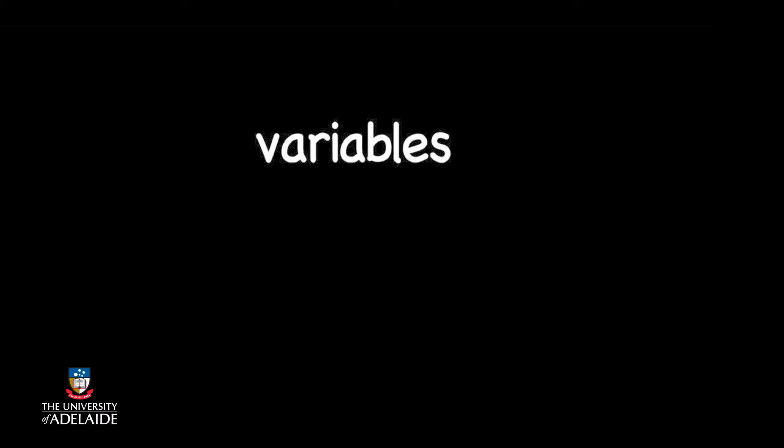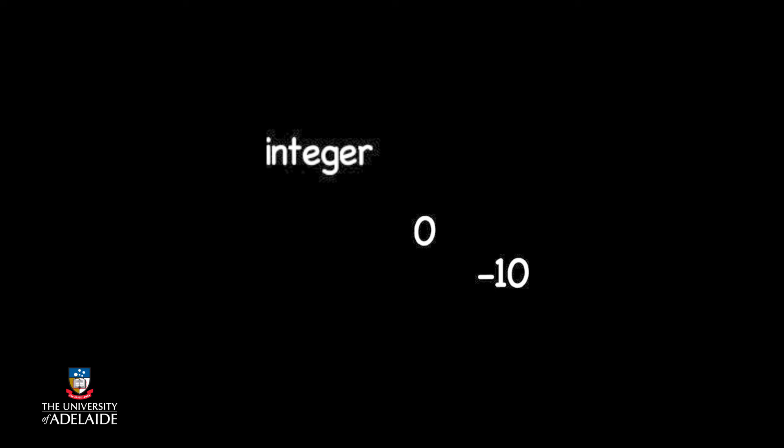Let's revisit some of the new concepts that we have introduced so far. We have talked about variables and the fact that they have a type. Most programming languages have a range of generally useful data types which can be used for variables that you create in your program. The one we have used so far is integer, which is a numerical data type representing whole numbers.